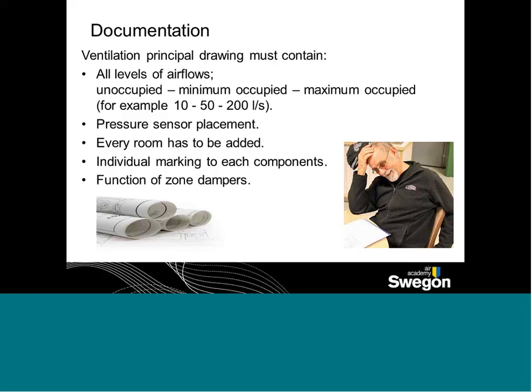Something which maybe seems boring but needs to be considered: whenever you do any sort of system, particularly DCV systems, everything must be documented properly. The levels of airflow — unoccupied, minimum, maximum — where you're putting the pressure sensors, what sort of flexibility you want in the room in the future, what rooms should be added. You need to make sure that each component is marked up and what its functionality is. Very easy to get missed.